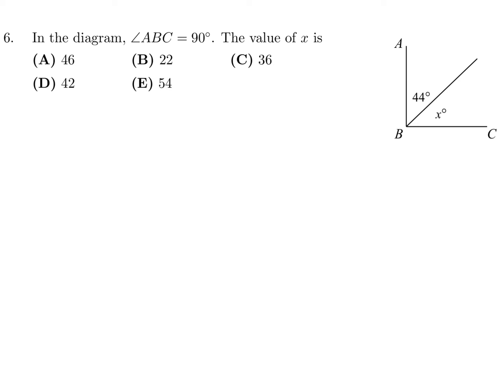Question 6: In the diagram, angle ABC is equal to 90 degrees. What is the value of X? Since ABC is 90°, the whole angle has to add up to 90. So 44 + X = 90, therefore X = 90 − 44, which means X is equal to 46. The answer is A.